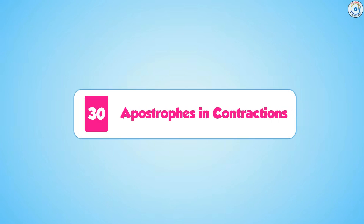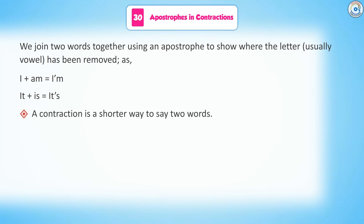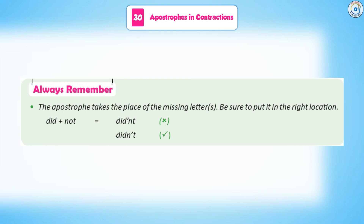Chapter 30: Apostrophes in Contractions. We join two words together using an apostrophe to show whether a letter — usually a vowel — has been removed. For example, 'I' plus 'am' becomes 'I'm', and 'it' plus 'is' becomes 'it's'. A contraction is a shorter way to say two words. The apostrophe looks like a comma, but we place it above the line of writing. Contractions should be avoided in formal writing. Always remember: the apostrophe takes the place of the missing letters. Be sure to put it in the right location.